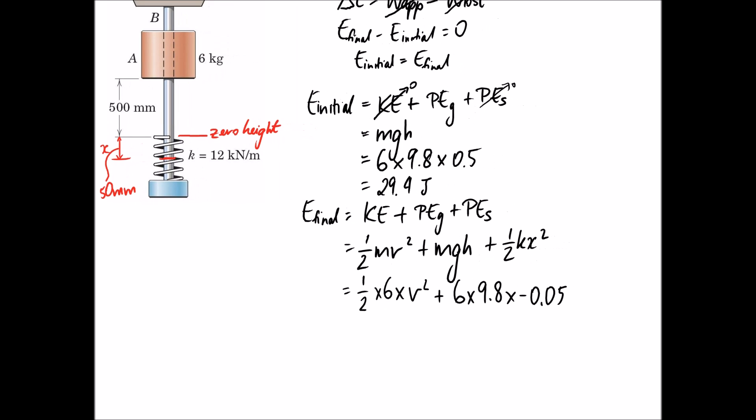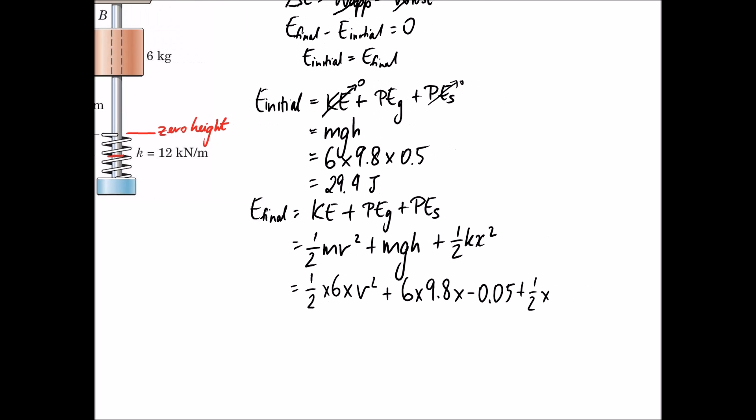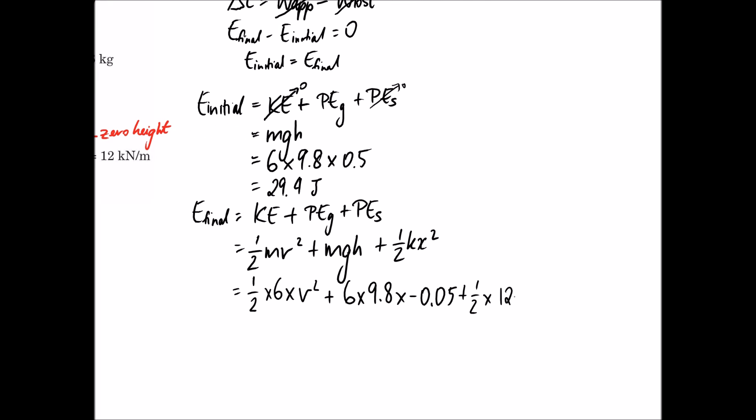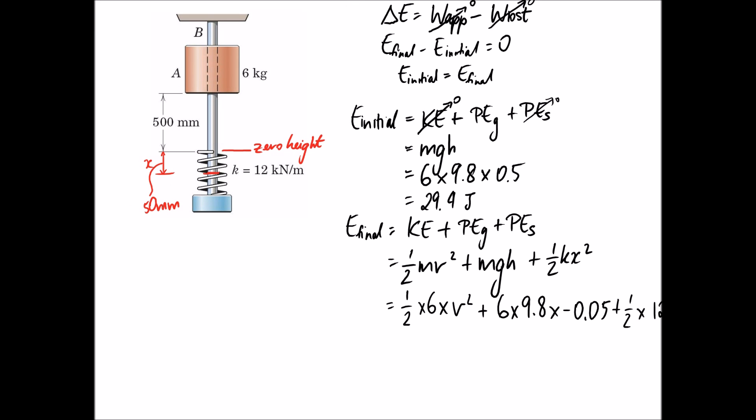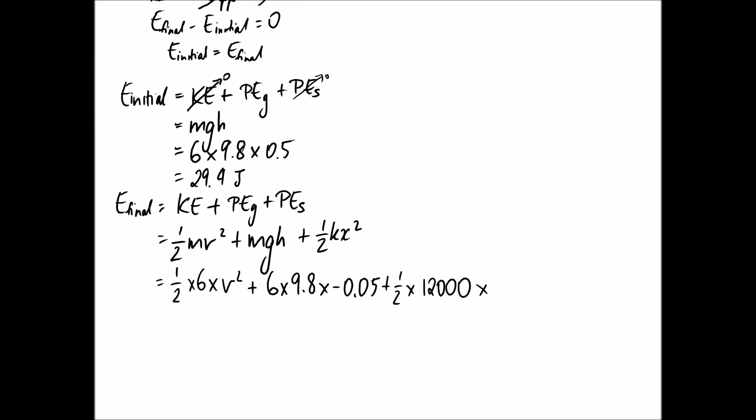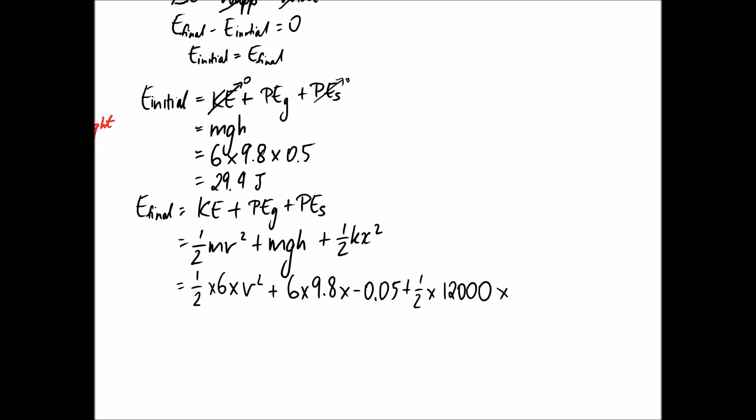The last thing is the potential energy due to the spring, which is a half multiplied by k for the spring, which is 12 kilonewtons per metre, or in metres it's 12,000. The other thing we need is the compression of the spring, which is x. Looking at our diagram, it's 50 millimetres as described in the question, so this becomes 0.05 squared.